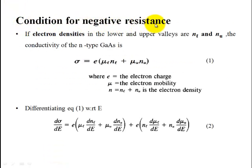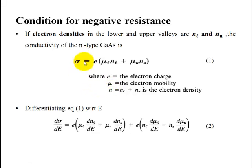The condition for negative resistance: The conductivity of N-type gallium arsenide can be written as sigma = e(μ_L · N_L + μ_U · N_U), where e is the electron charge, μ_L and μ_U are the mobilities of the lower and upper valleys, and N_L and N_U are the electron densities in the lower and upper valleys. We differentiate this equation with respect to E using the product rule to get equation 2.